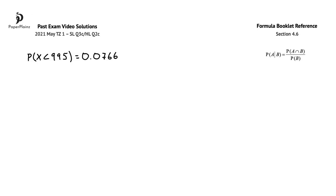In this question part we have to find the probability that the mass of a bag is greater than 1005 grams, given that the bag is not rejected. The words given that show us that this is a conditional probability question, so we'll use the following formula from section 4.6 of the formula booklet.